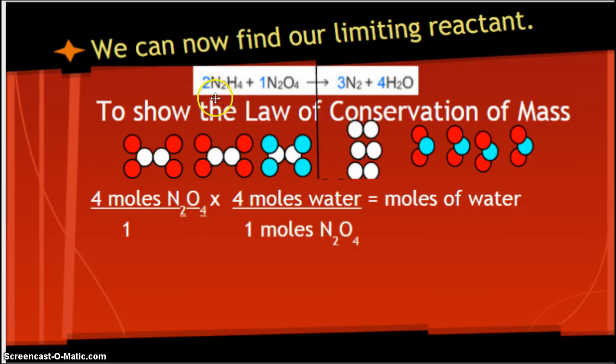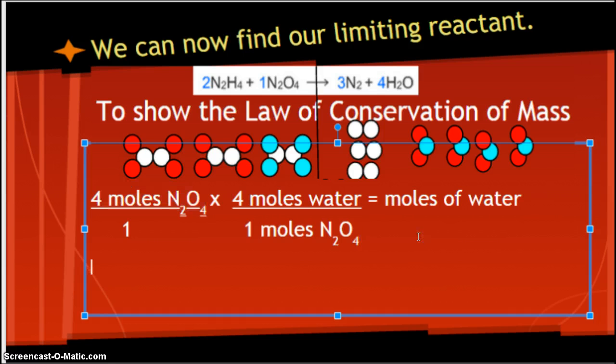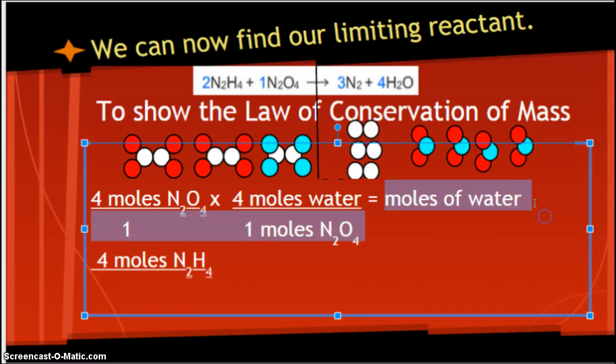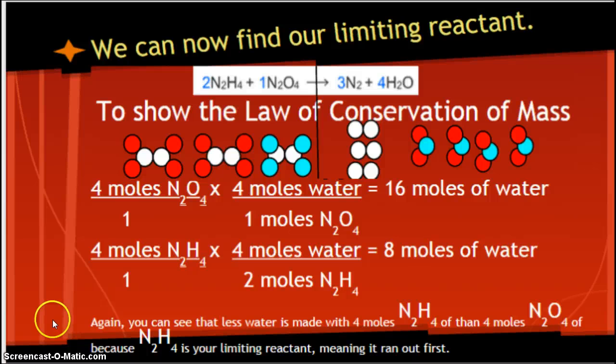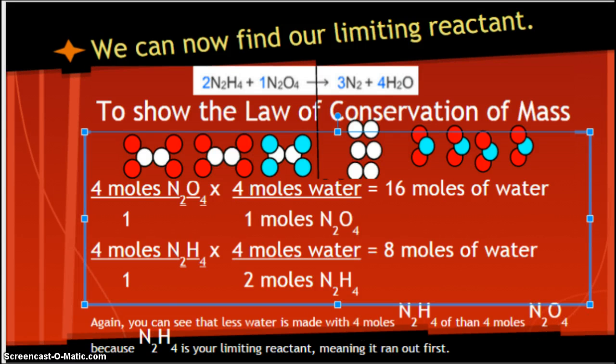Set it up like this by yourself for N2H4. Make sure you know how to set this up. Hit the pause button. Set it up. In other words, you're kind of zoning out on me. Not good. I want you to start out with 4 moles of N2H4 and then tell me how many moles of water that would make. The answer is, put it in your calculator and you get the 8 moles of water again. So this is the setup we're going to use for harder problems. Again, you can see that less water is made with 4 moles of N2H4 than 4 moles of N2O4 because N2H4 is your limiting reactant, meaning it ran out first.